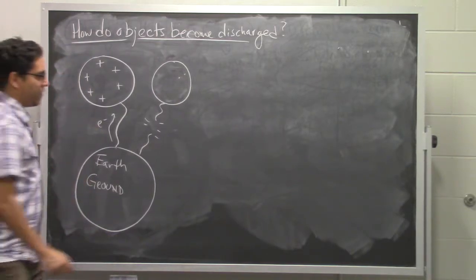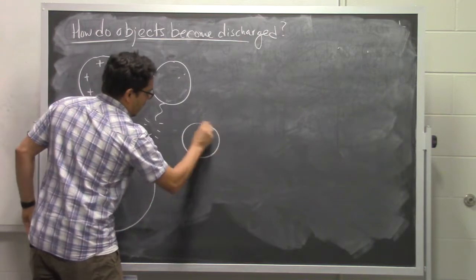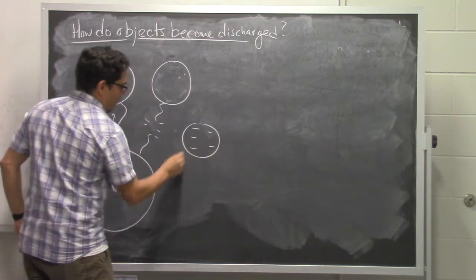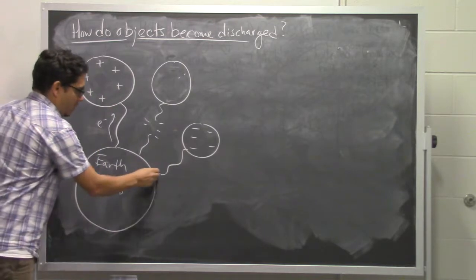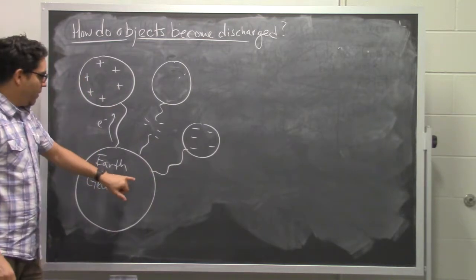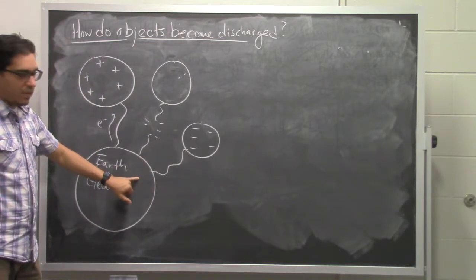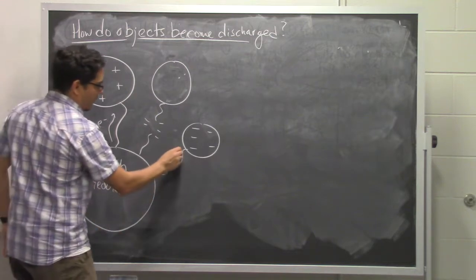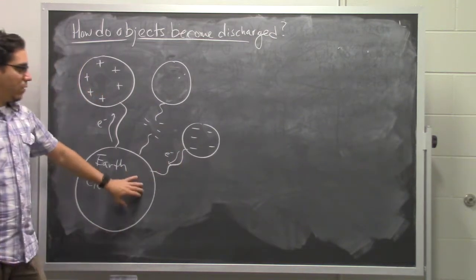This works both with positively charged objects and negatively charged objects. So if we take a negatively charged object, like this one, and we physically attach it to the earth, the earth is also a great sink for electrons, meaning that these electrons can just run down this wire into the earth,